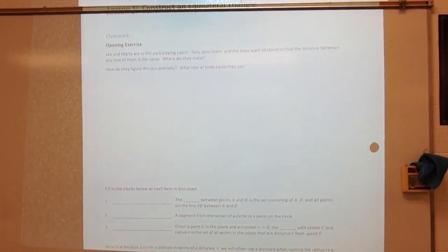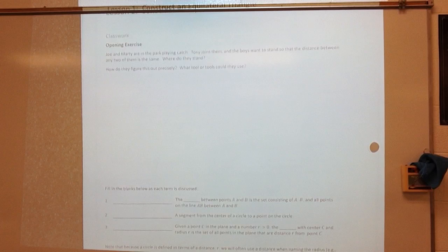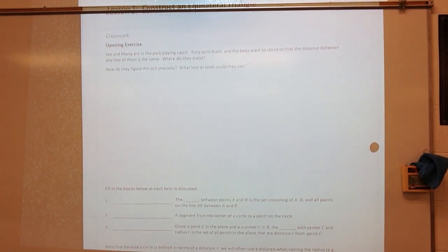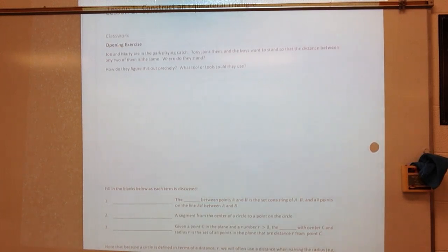All right, so we need to look at what we know and what it is it's asking us to do. So it says that you've got two people that are at the park, and they are playing catch. You've got a third one that joins, and they want to stand so that the distance between any two of them is the same. So in other words, they want to make sure that Joe and Tony have the same distance as Marty and Tony, or Joe and Marty. So how do they figure this out? Where do they stand?